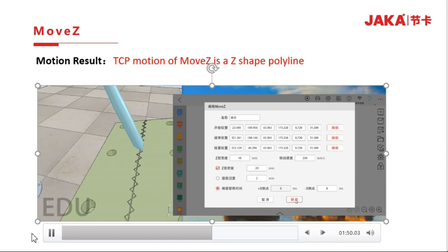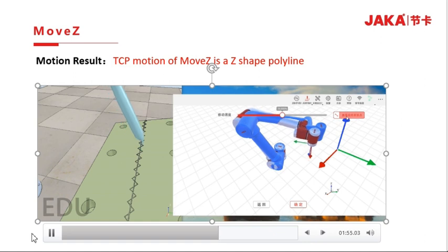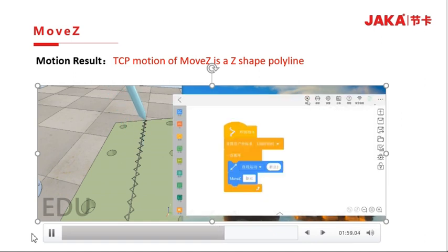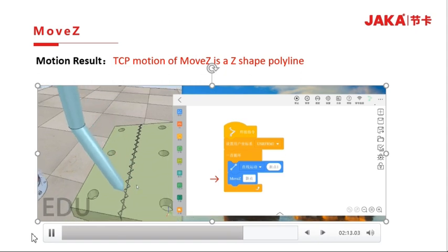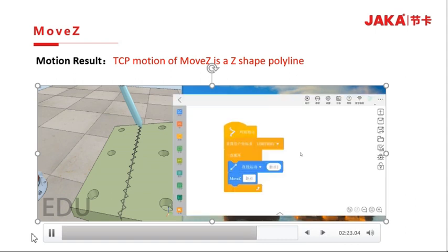Now, tick the MOVZ arc transition and run the program again. We can see that the robot will move with an arc transition path at the peak of the welding plane.